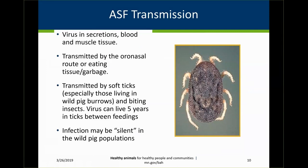The African Swine Fever virus is found in secretions, blood, and muscle tissue, and it can also be transmitted by eating infected tissue or garbage. Another unique situation is that there's a soft tick that serves as an additional host. It's not found often in the United States, but it is significant. This soft tick — unlike a hard tick — can bite an infected animal and then hide in a burrow for up to five years and still be infectious to another pig that moves in, making wild pigs a potential silent carrier.